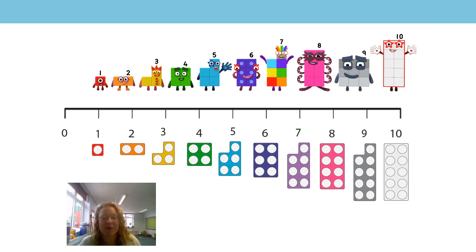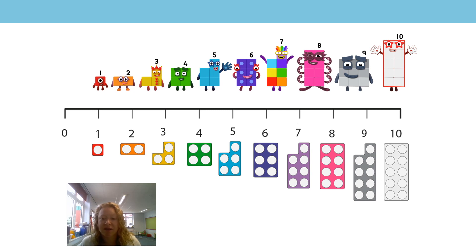A little bit trickier backwards, isn't it! Now let's start on one and skip count in twos, so we'll be saying all our odd numbers. One, three, five, seven, nine — and let's go back the other way: nine, seven, five, three, one. Good job!